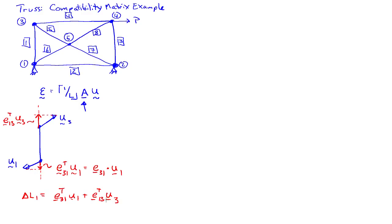So the change in length of bar one is E31 transpose U1 plus E13 transpose U3. And then divided by L will give me the strain in bar one, or divide by L1 rather.